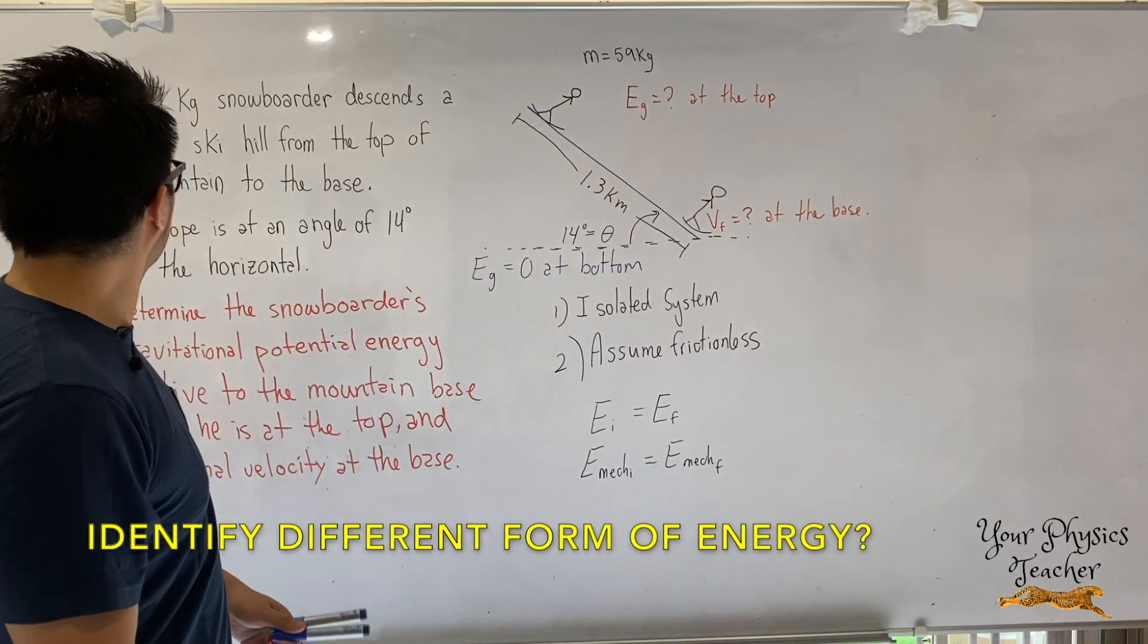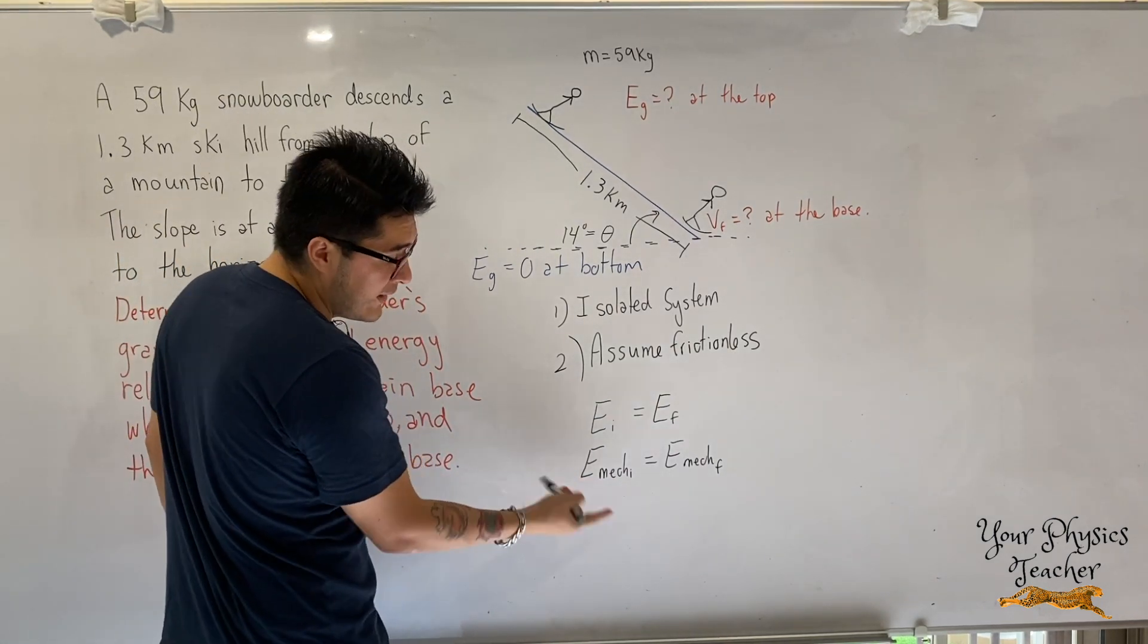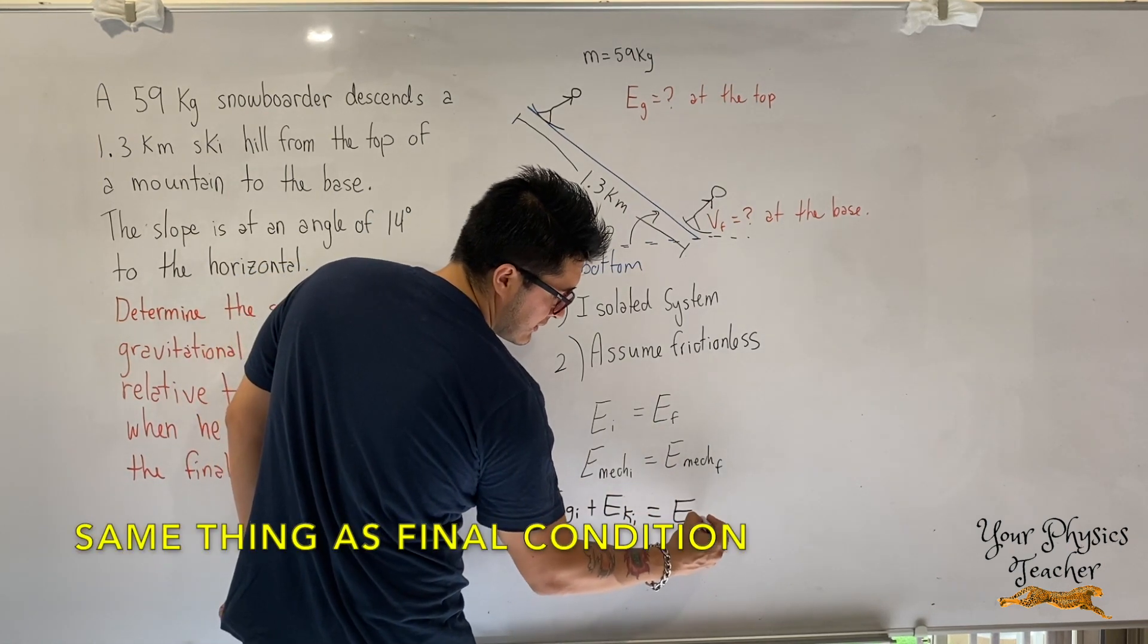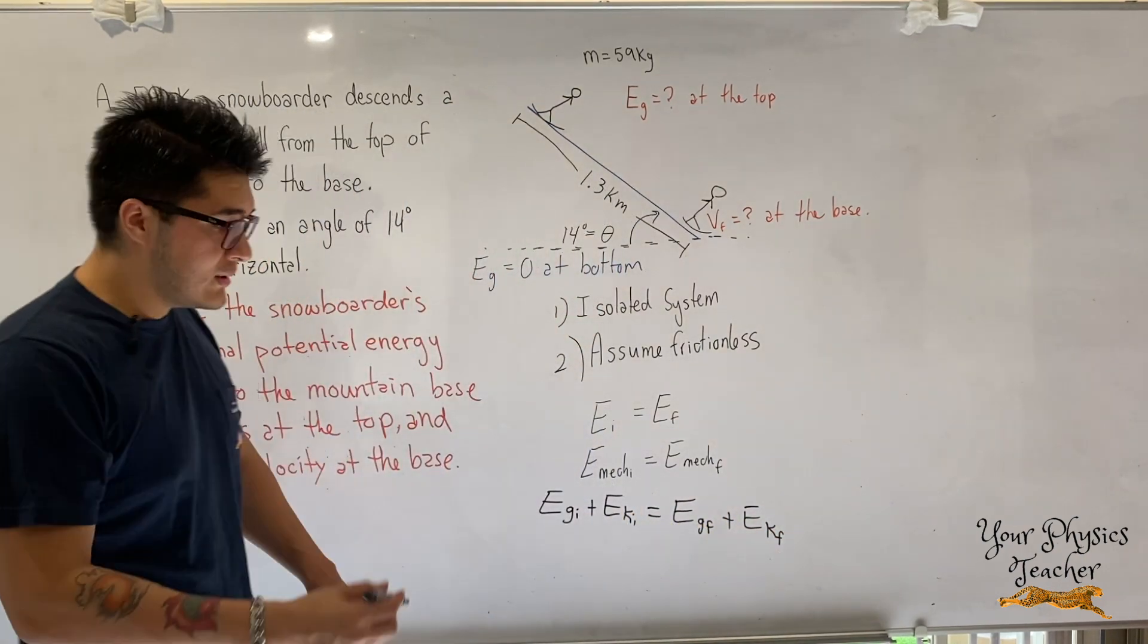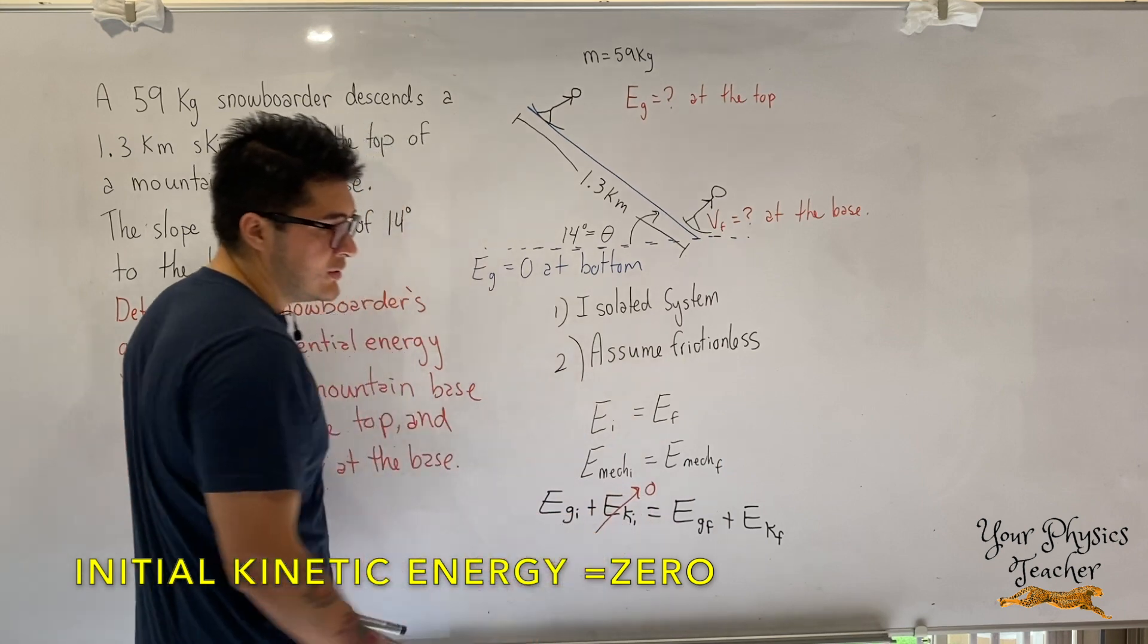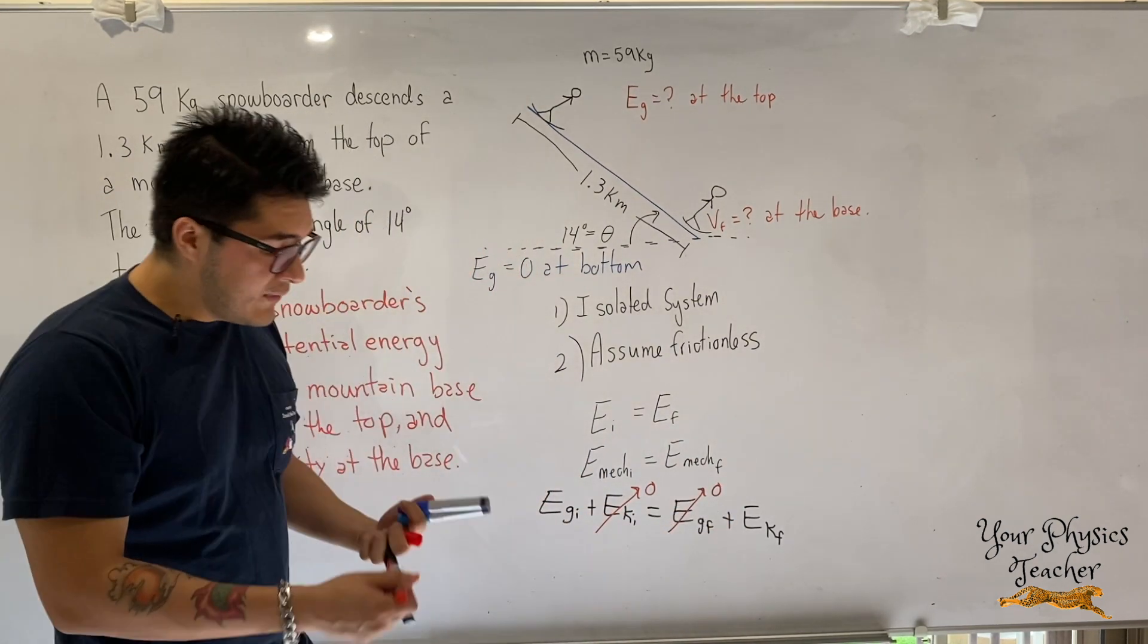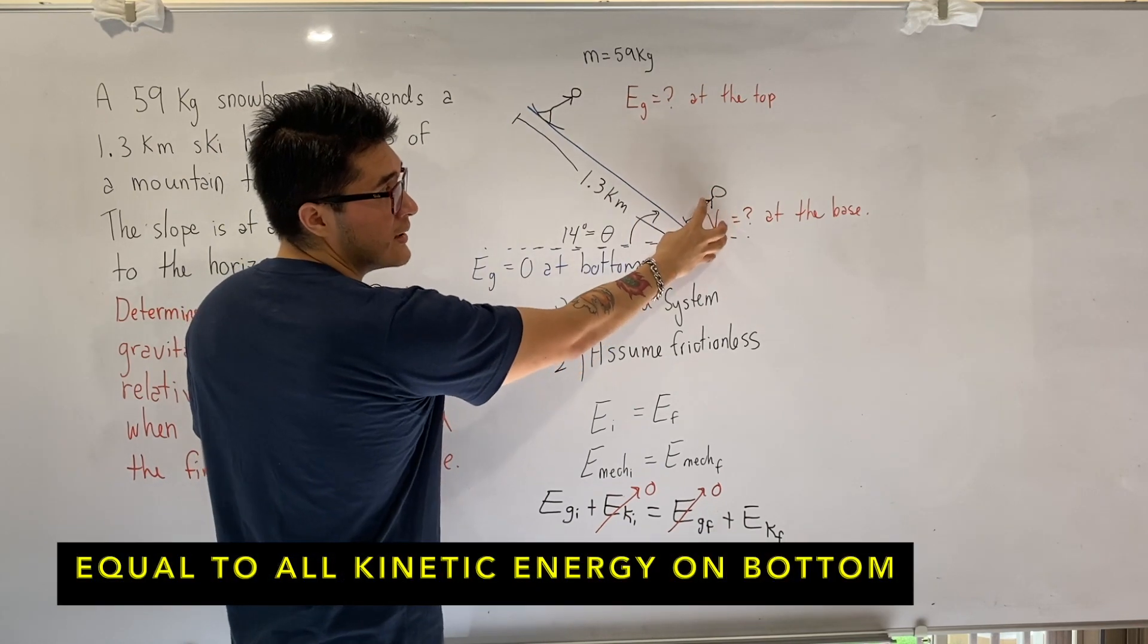We just need to identify what are the different forms of energy. In this case, the snowboarder descends, so they're going to start at rest. The only forms of energy we have to consider are potential energy and kinetic energy. Because it starts from rest, the initial kinetic energy is zero. And because we define zero potential to be at the bottom, our potential energy at the bottom is also zero. So all the potential energy at the top is going to equal to all the kinetic energy at the bottom.